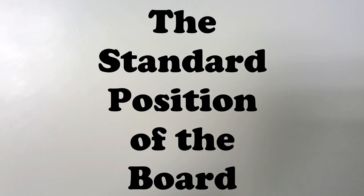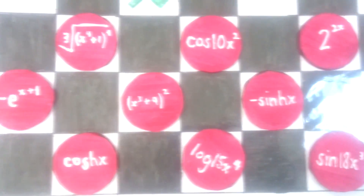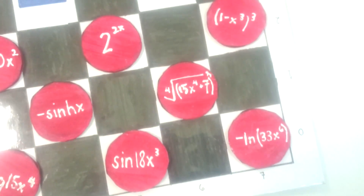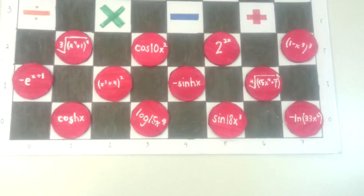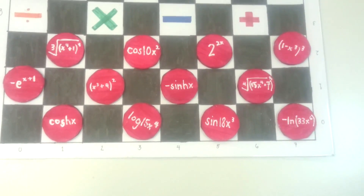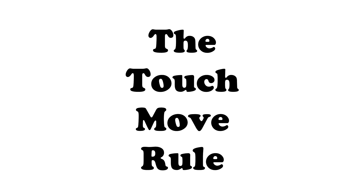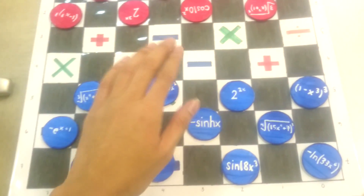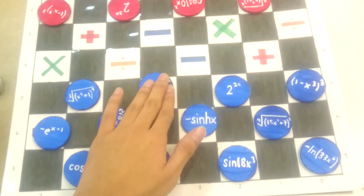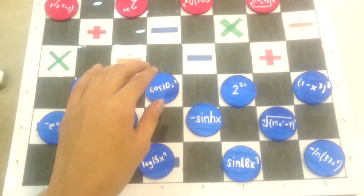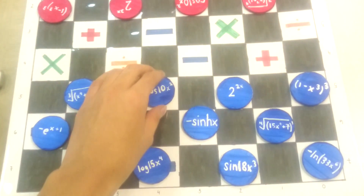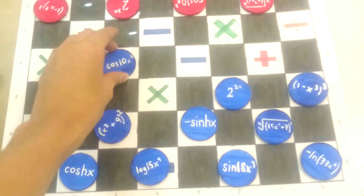The standard position of the board. The touch-move rule: if a player touches a chip, the player is required to move that chip unless it is impossible to do so.